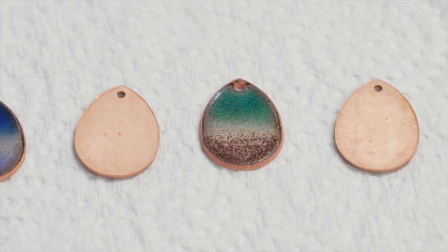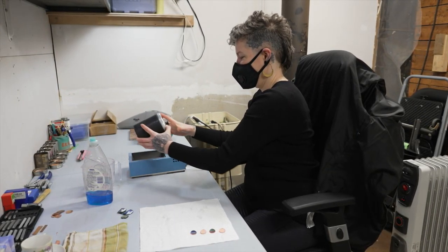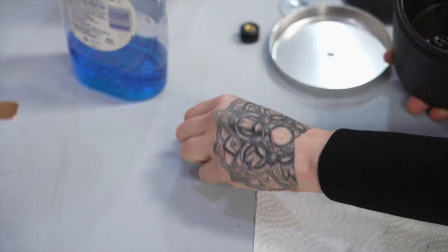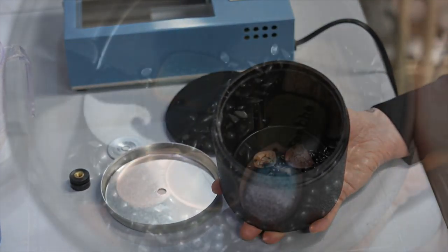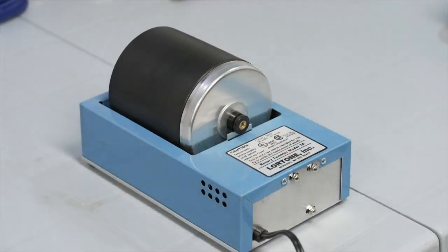A quick dip in the pickle pot removes any fire scale. Now the finished earring and necklace pieces are ready for the tumbler. Water and dish soap are placed inside the drum along with the jewelry and steel shot. The tumbling action cleans and polishes.